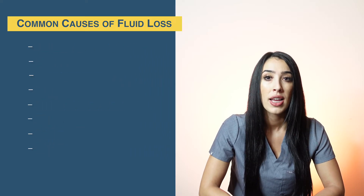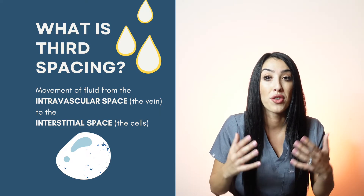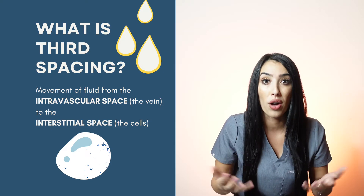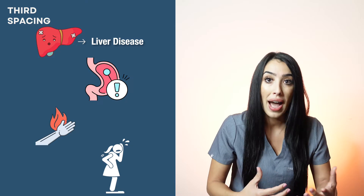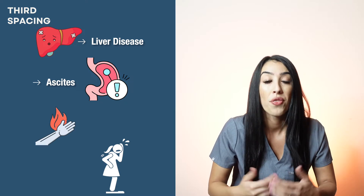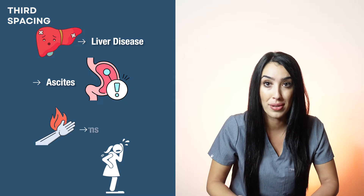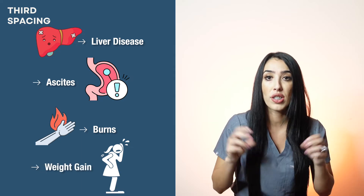Third spacing is the movement of fluid from the intravascular space to the interstitial space, causing the patient to have a drop in circulating volume because it is no longer in the vessels. This can happen when patients develop liver disease and cirrhosis, where they can build up ascites — the accumulation of fluid in the abdominal peritoneal cavity. Third spacing can also happen in patients who have burns, leading to extensive edema, marked weight gain, and low albumin levels. These patients need assessment of abdominal pressures, abdominal girth, and may need surgery or paracentesis.